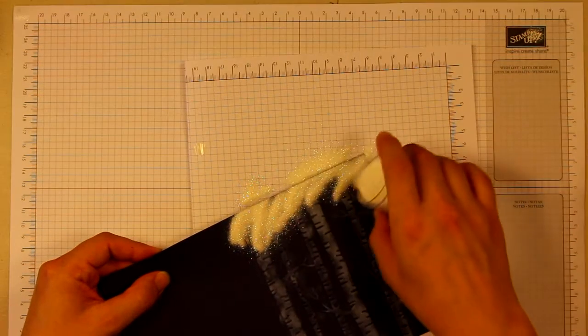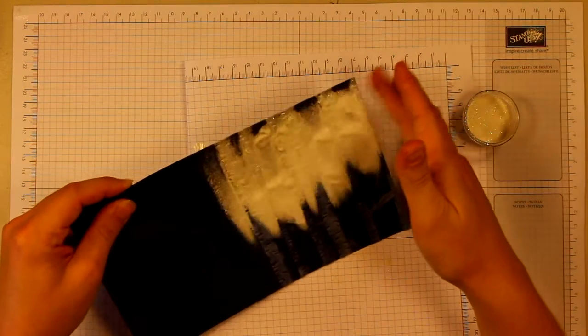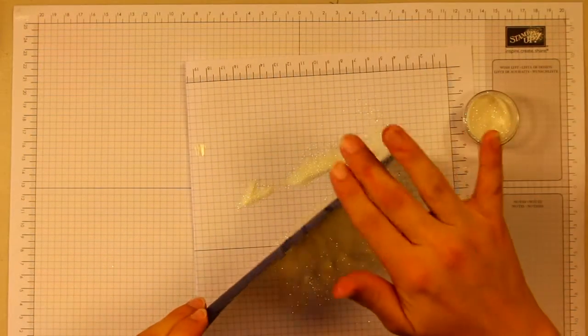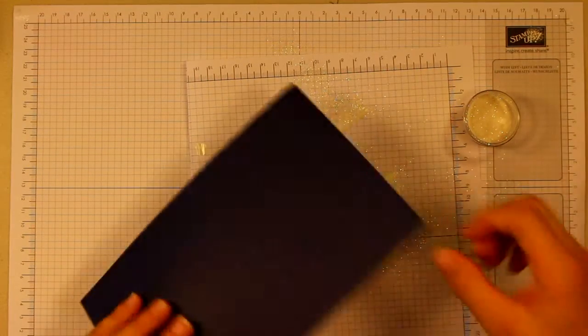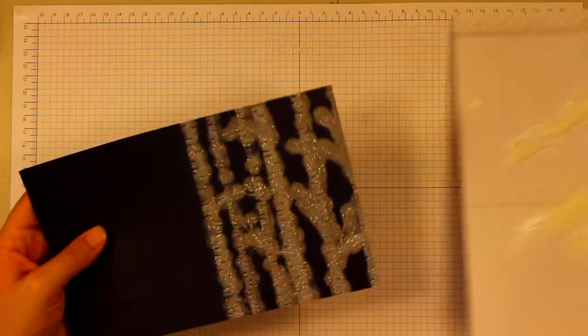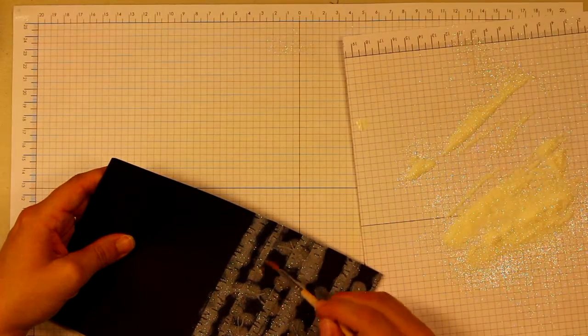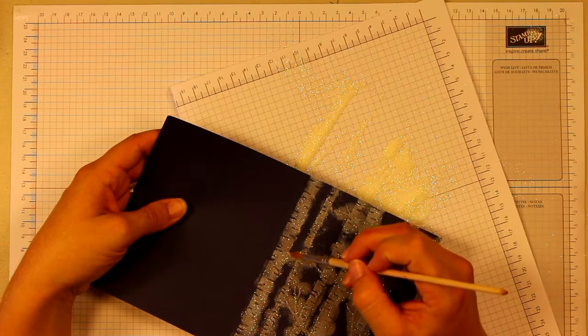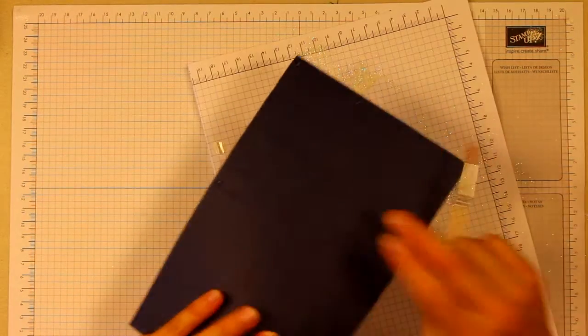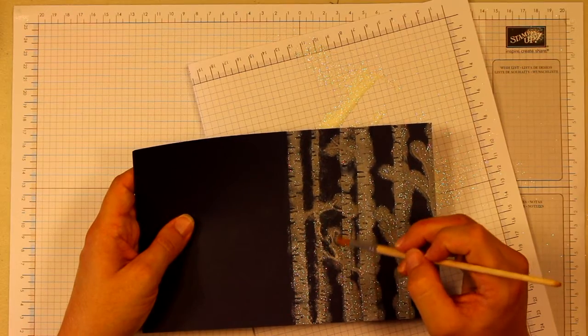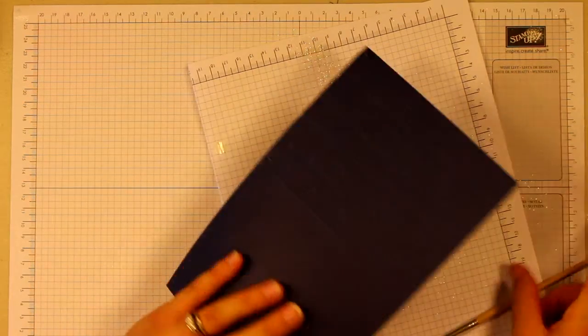I'm going to sprinkle my embossing powder over this. And as predicted, I did not keep it just on top of the trees. So you're going to want a paintbrush and you're going to run this any of those areas that you did not want the glitter, any of the areas between the trees. You're going to use that paintbrush to remove most of the glitter or all of it. It doesn't have to be perfect.